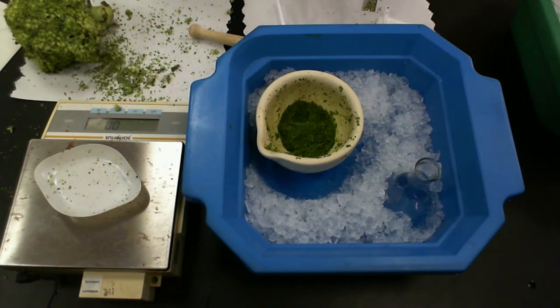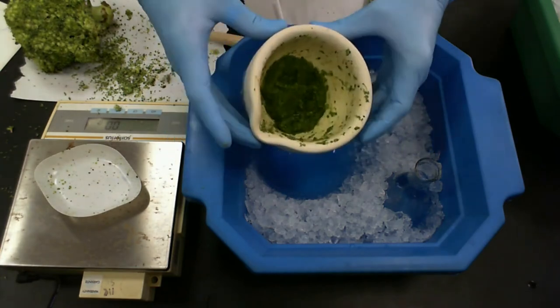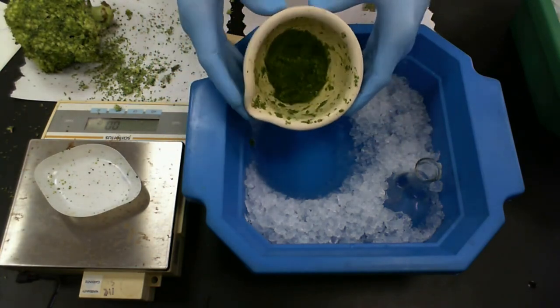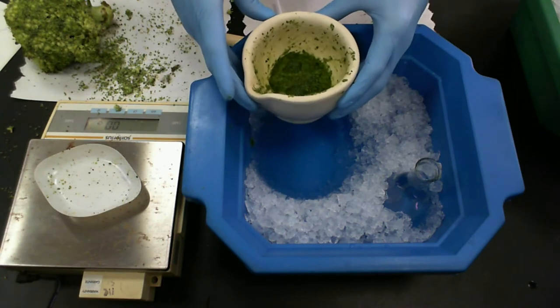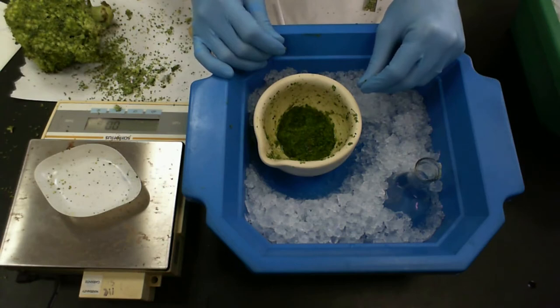So now we have our ground up tissue. So this is our slurry that's in here. You can see just basically a green soup. It's a mush. That's not really the technical term, but it's basically just this ground up tissue.